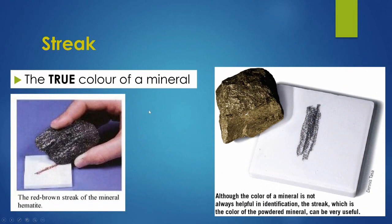Sometimes the outside color of a mineral looks one thing, but when you scratch it on a tile, the powder is different. Hematite looks black from the outside, but its streak — the powder — is red. So streak is reliable; color is not. You can use them together though: if something is black and has a red streak, chances are it's hematite. Pyrite is a bit gold and has a gray streak.